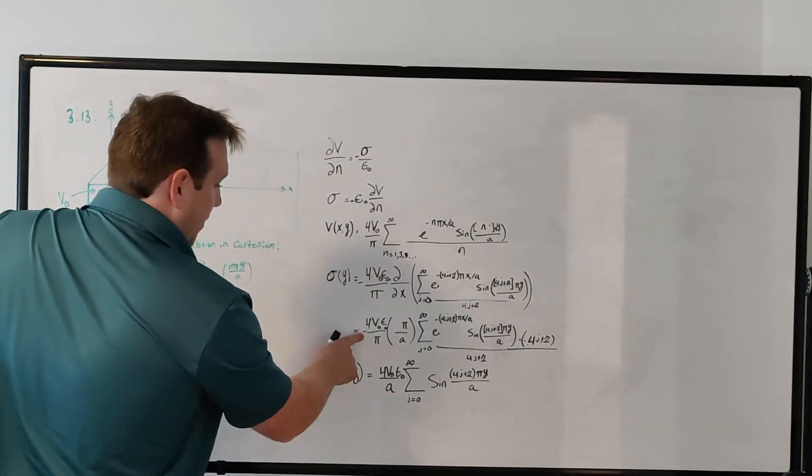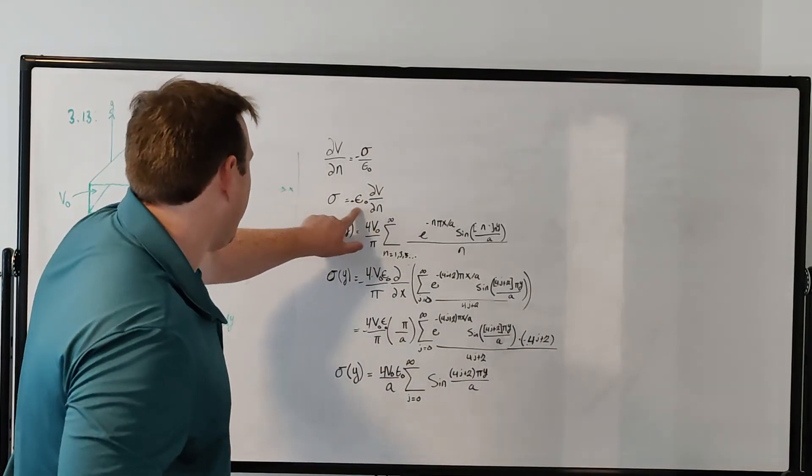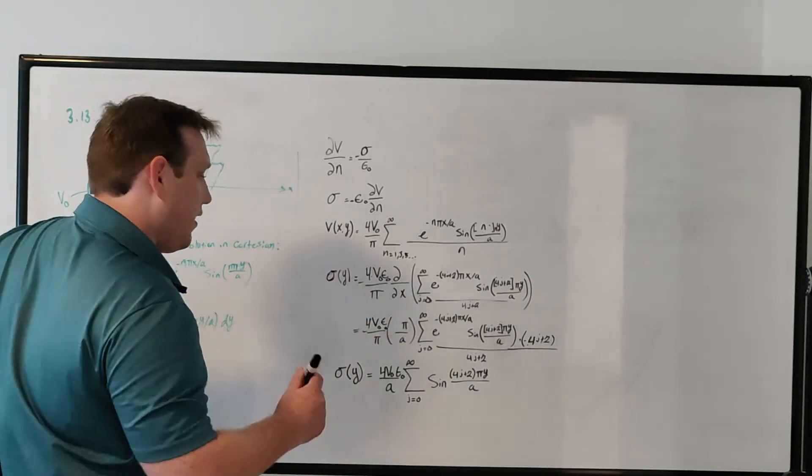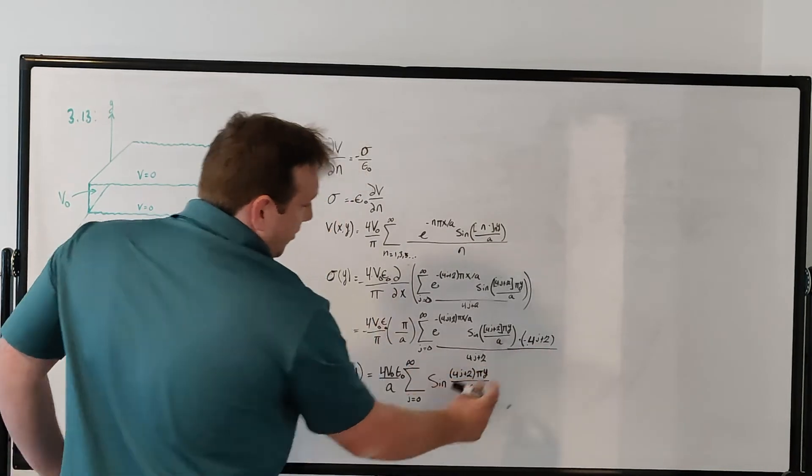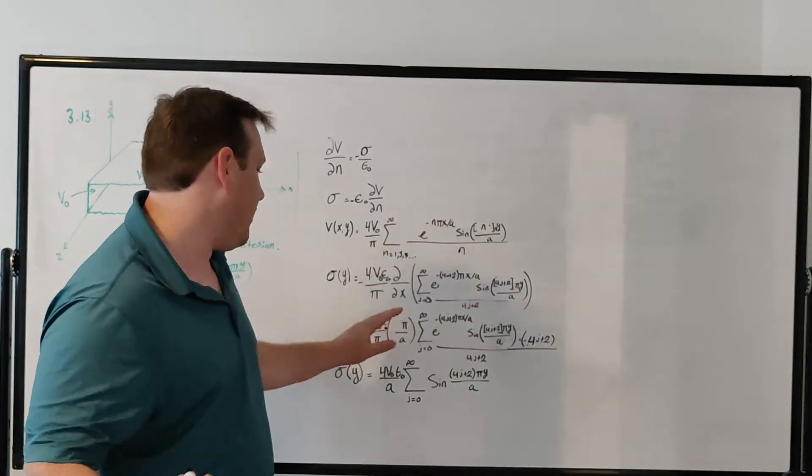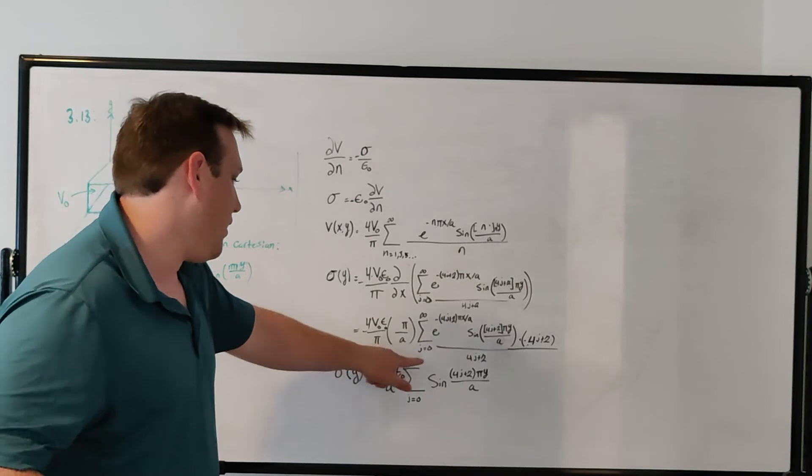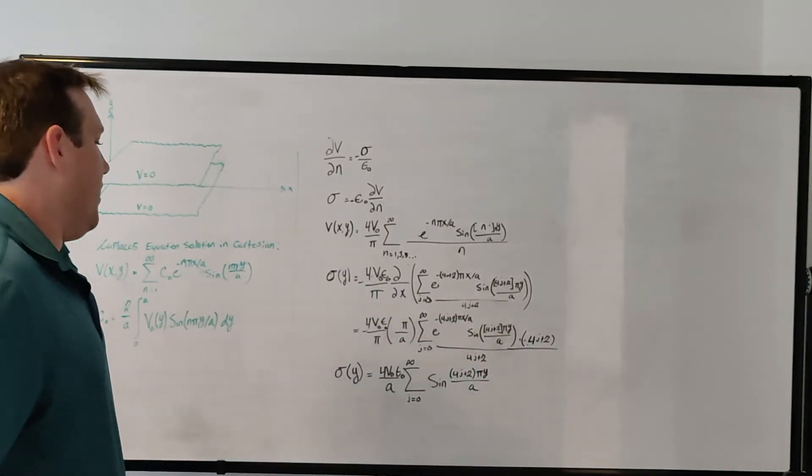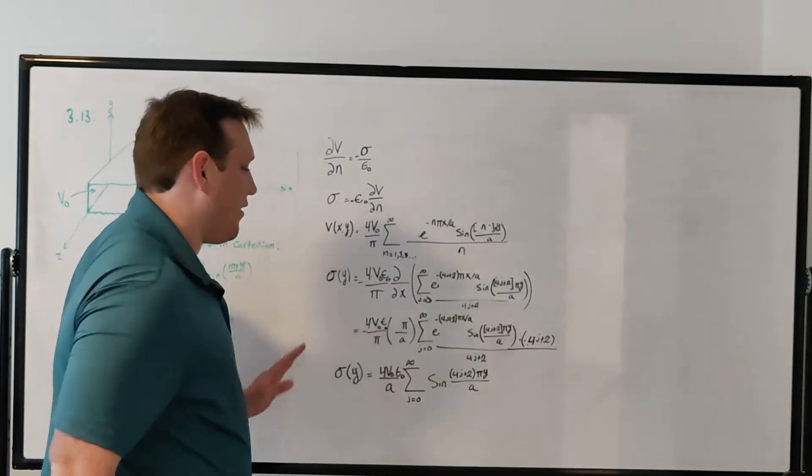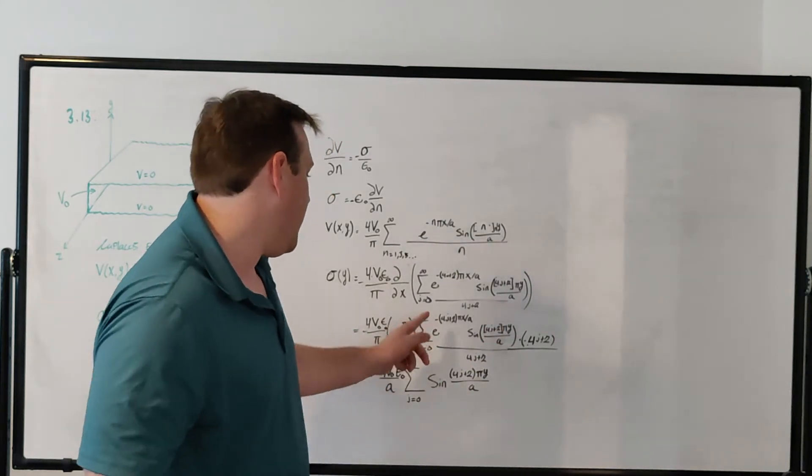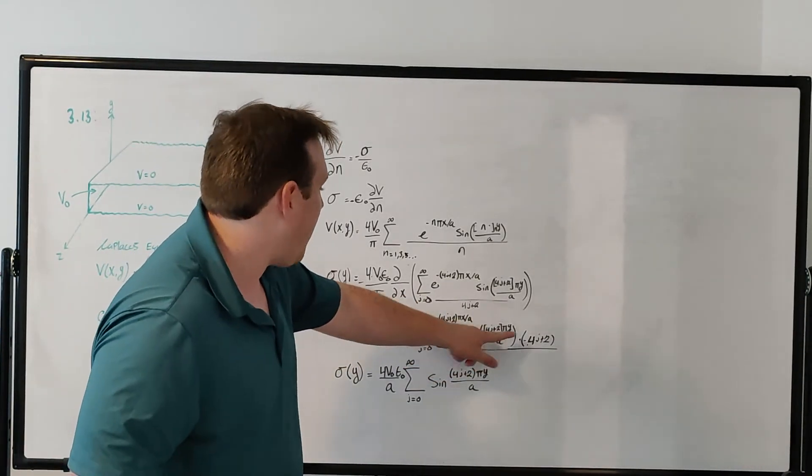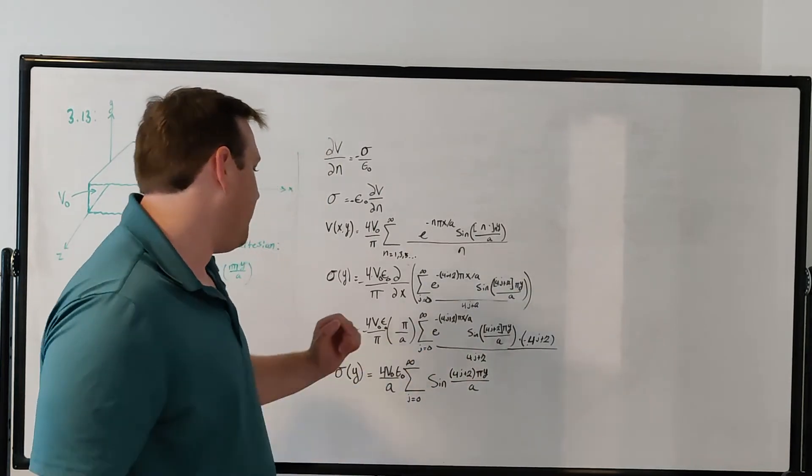There's a minus 4 V naught, and then the epsilon naught pi comes from here, and then pi over a comes out, and then the n. The pi over a just comes out because they're constants, and then the summation, we just have the same function again. E to the minus n pi x over a times sine of n pi y over a times n divided by n, so the n's cancel.